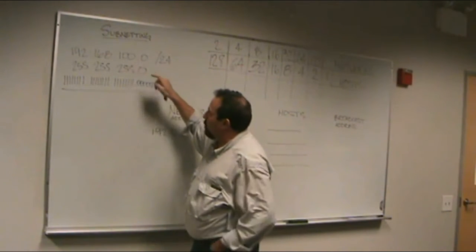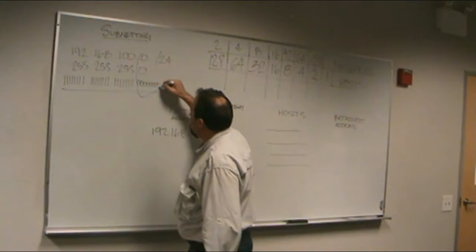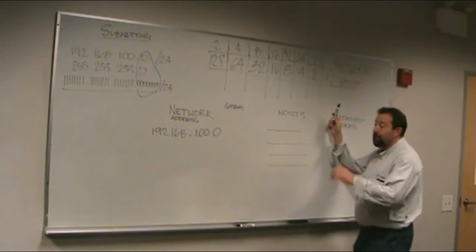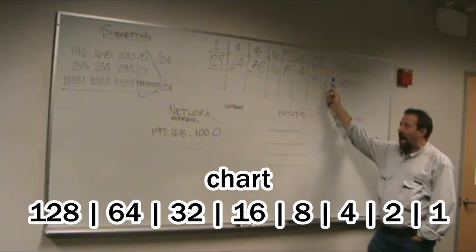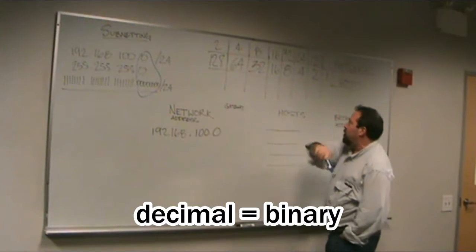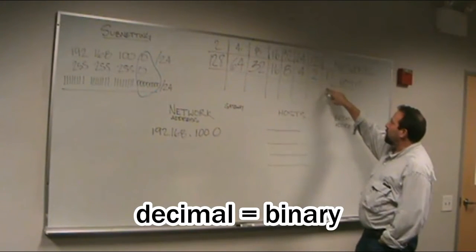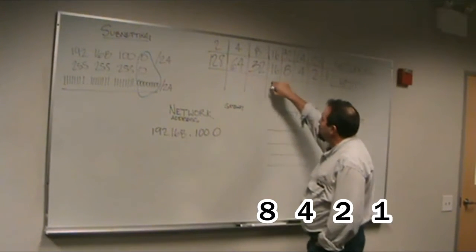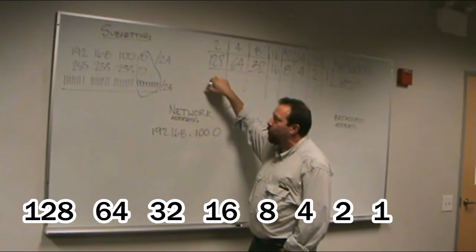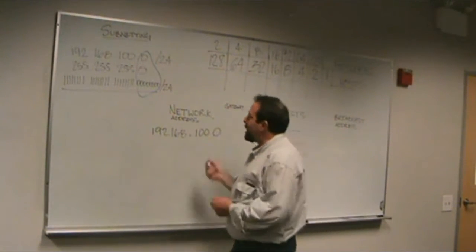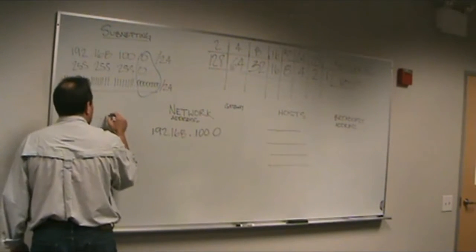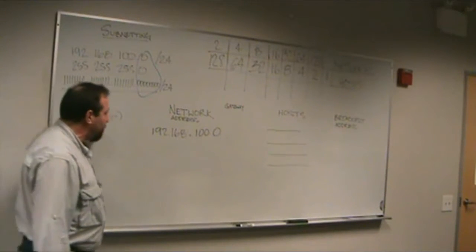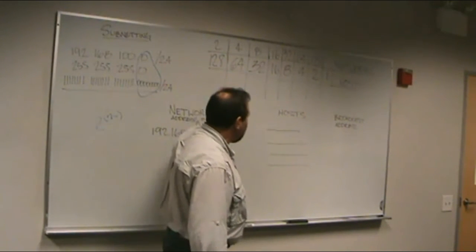We are going to borrow bits from this group here to create new networks. We start with this chart, which is basically how to convert a decimal number into binary. We start with the number 1, double it to 2, 4, again to 8, 16, 32, 64, and finally 128. This equals 2 to the nth power, and that's how most people know how to subnet. We're going to do it much simpler — all we're going to do is use this chart.